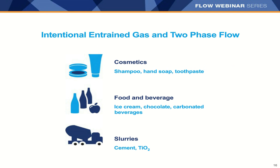Examples of intentional entrained gas and two-phase flow include: in the cosmetics industry — shampoo, hand soap, toothpaste; food and beverage — ice cream, chocolate, carbonated beverages; slurries such as cement and titanium dioxide.